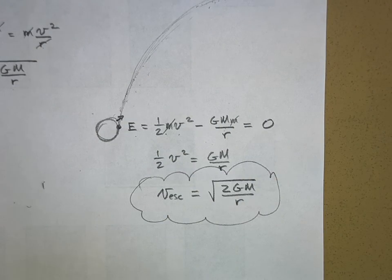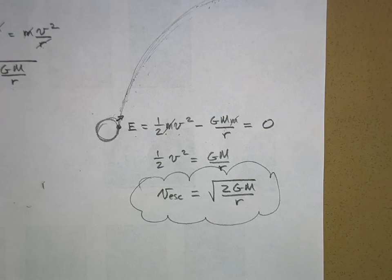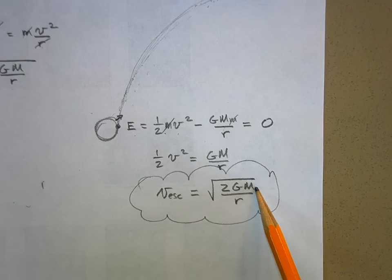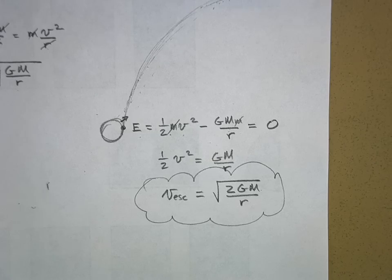This equation lets you find the escape velocity from any object in space. Amazingly, if you're standing on a small asteroid, the escape velocity might be just two meters per second. So if you're an astronaut on the surface of an asteroid, don't jump — you'll go up and never come back down. You can literally launch yourself into space off an asteroid.